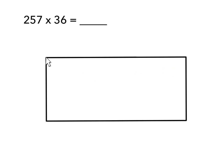My array that I've made here has one longer dimension and one shorter dimension. I'm going to label the longer side or the longer dimension with the larger number. In this case, 257. The shorter dimension, therefore, will be 36, the smaller number in the equation.